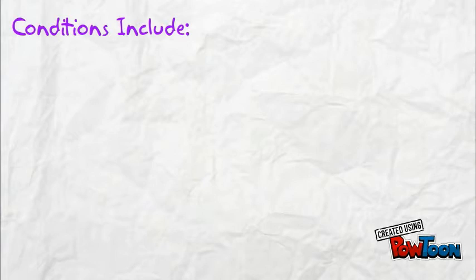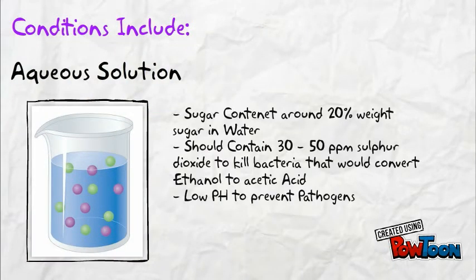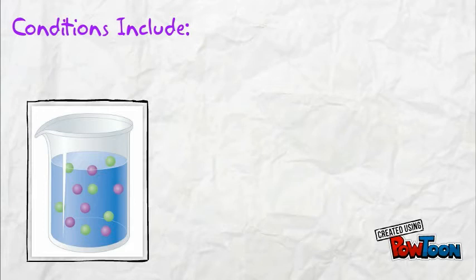The conditions for fermentation include an aqueous solution in which the yeast can act on the carbohydrates. It should also be at a low pH level, as this prevents pathogens from growing as well as preventing bacteria that would convert the ethanol to acetic acid.